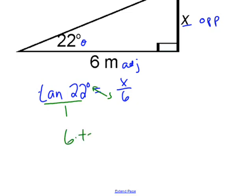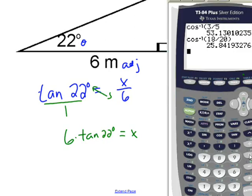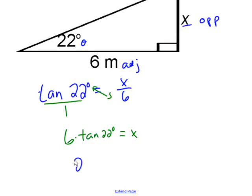In this case, I just take six times tan of 22 degrees and that equals x. So I go to my calculator: six times tan of 22 equals 2.42. It said to the nearest tenth, so I'm going to leave it at that and I'm going to label it meters.